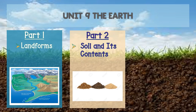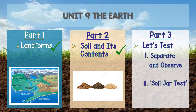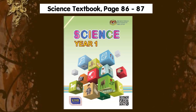We had learned about landforms and soil and its contents. Today we are going to do some activities to learn more about the soil and its contents. There are two tests today. The first test is we are going to study the soil's contents through the separate and observed method. The second test is we are going to study the soil contents through the soil jar test method. You may refer to your science textbook on pages 86 to 87.